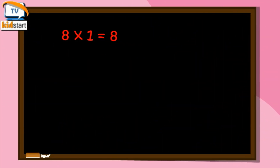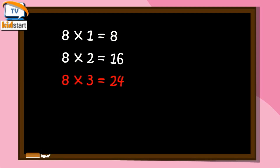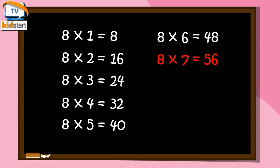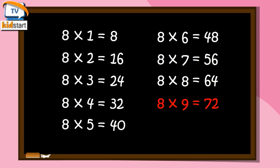Eight ones are eight. Eight twos are sixteen. Eight threes are twenty-four. Eight fours are thirty-two. Eight fives are forty. Eight sixes are forty-eight. Eight sevens are fifty-six. Eight eights are sixty-four. Eight nines are seventy-two. Eight tens are eighty.